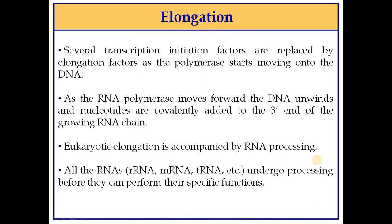During elongation in eukaryotes, several transcription initiation factors are replaced by elongation factors as the polymerase starts moving along the DNA. As RNA polymerase moves forward, the DNA unwinds and nucleotides are covalently added to the 3-prime end of the growing RNA chain. Eukaryotic elongation is accompanied by RNA processing.